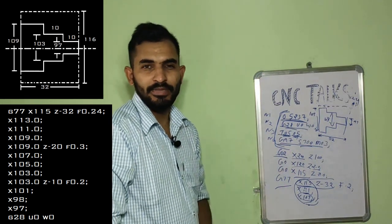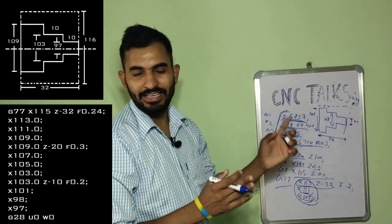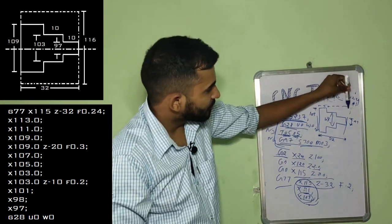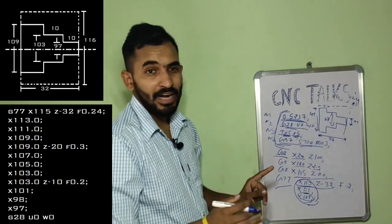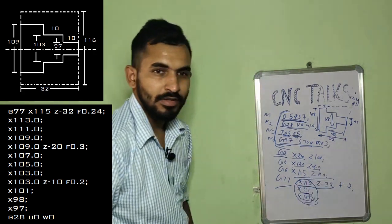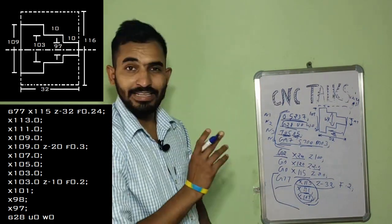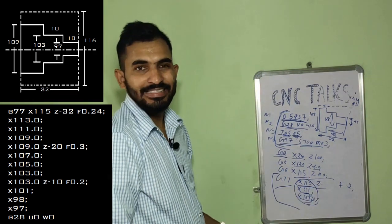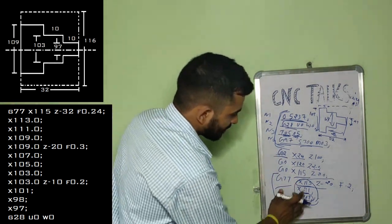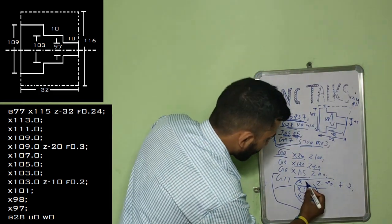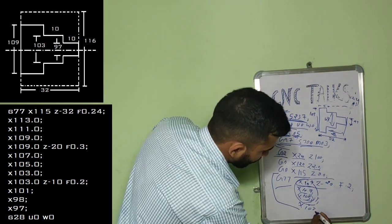When the first portion of this component is completed, we need to machine the further parts. All we need to do is just change the value of Z and X axis. After this, our tool is at this position maintained at 109 mm diameter. The next diameter we need to achieve is 103 up to a depth of 20 mm. All we need to do after this position is change the value of X and Z. From 32, the Z axis will become 20 and the X value will change as usual, which means X from 109 to 107 to 105 and then to 103.